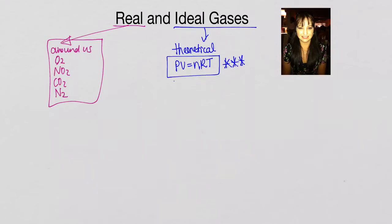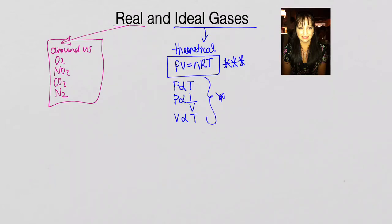An ideal gas doesn't exist, but it's a theoretical gas that would follow the mathematical relationships set out in the equation PV = nRT perfectly. We know that pressure is directly proportional to temperature, pressure is inversely proportional to volume, and volume is directly proportional to temperature. An ideal gas would follow these rules perfectly without any deviations.